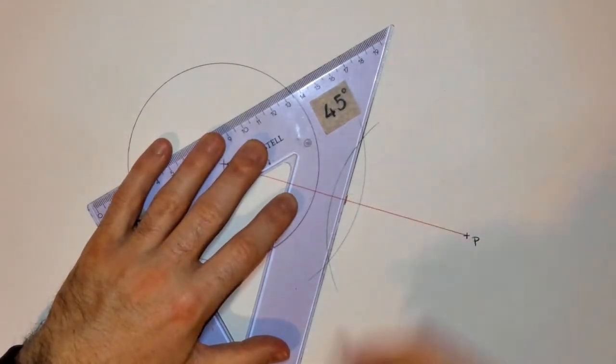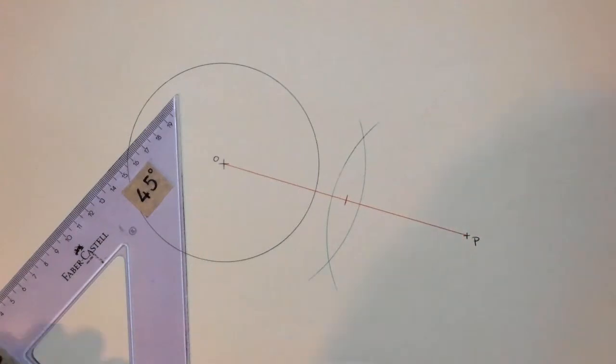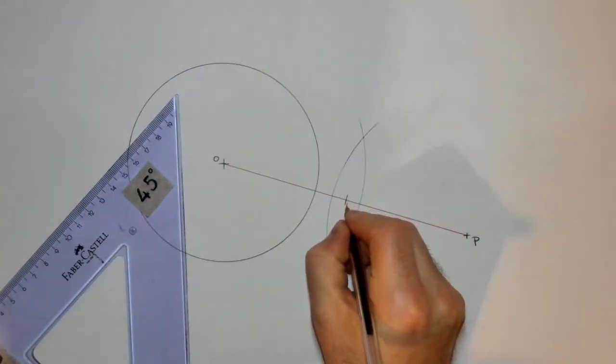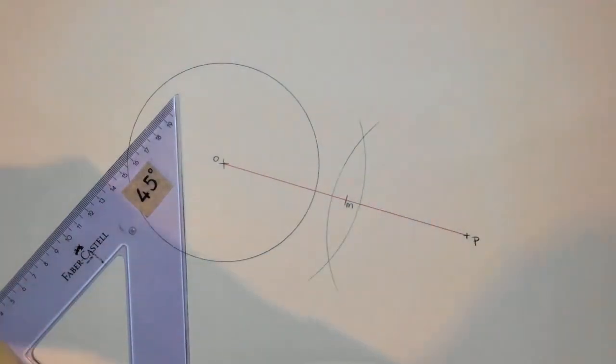You can do the line the whole way, but I'm just marking it in there for neatness purposes, and I'm going to label that M. I've now found the midpoint of the line.